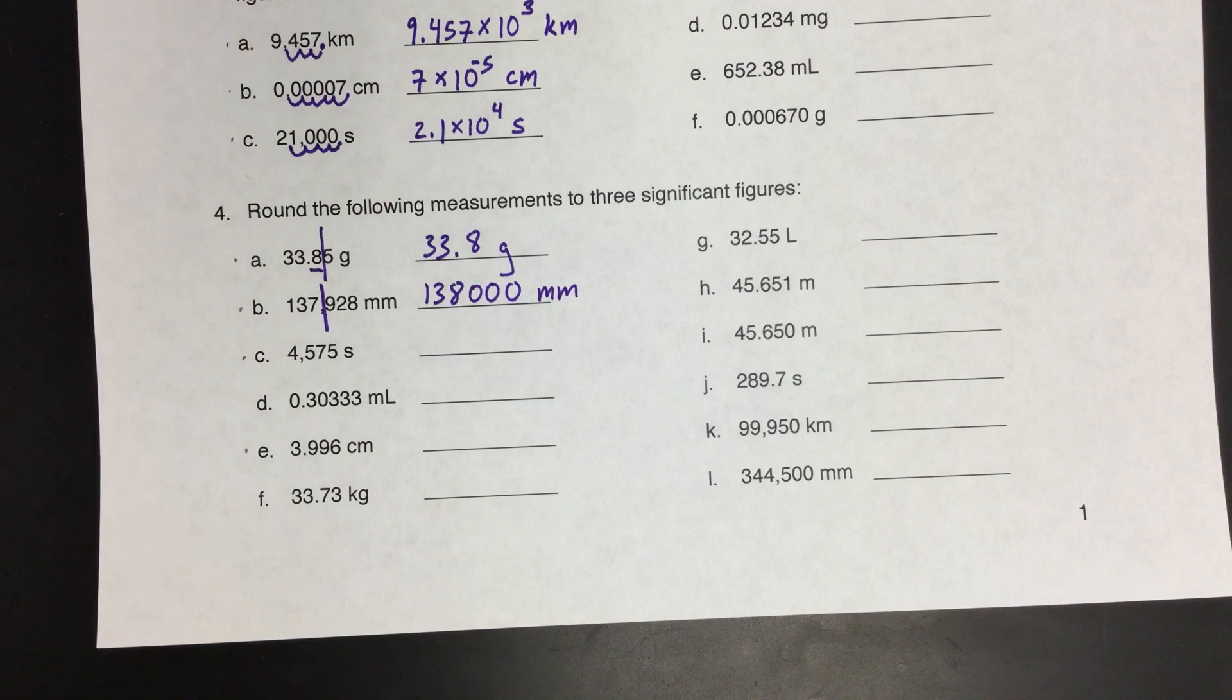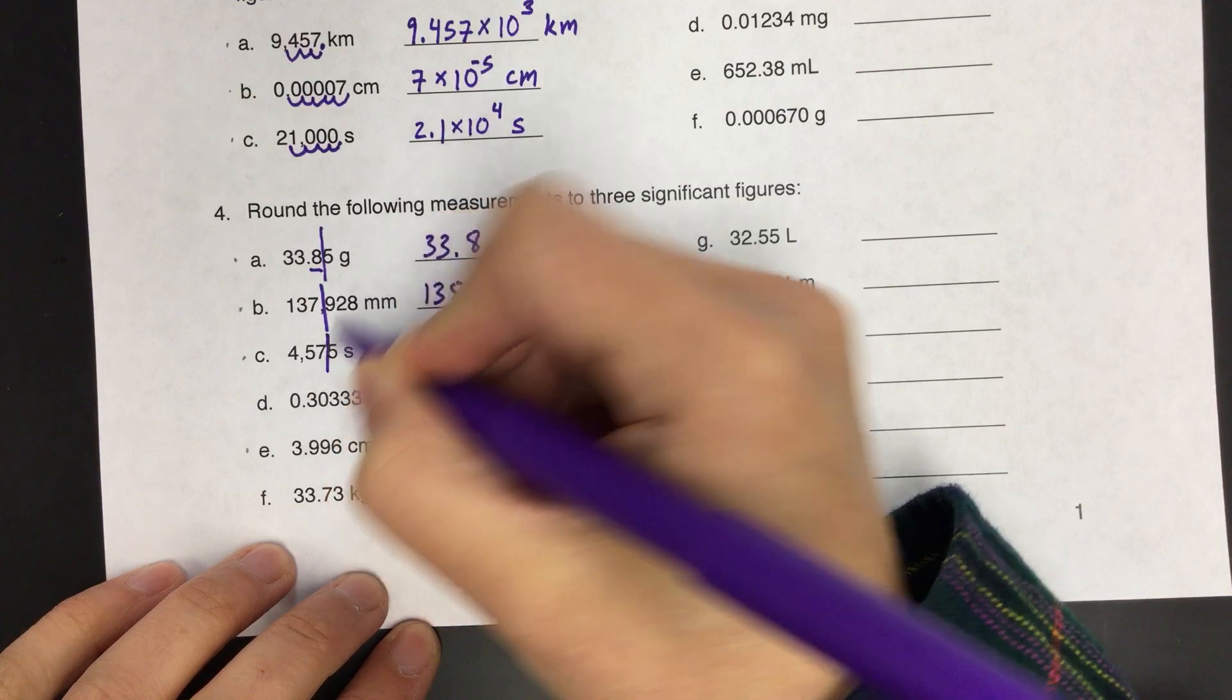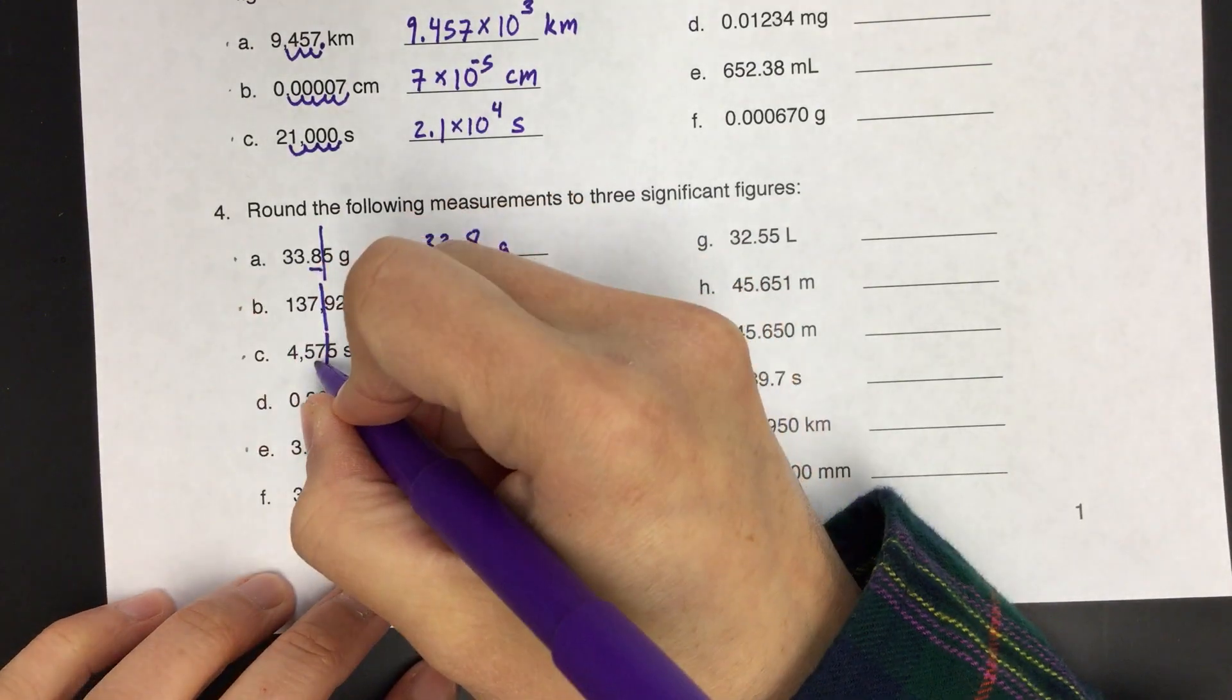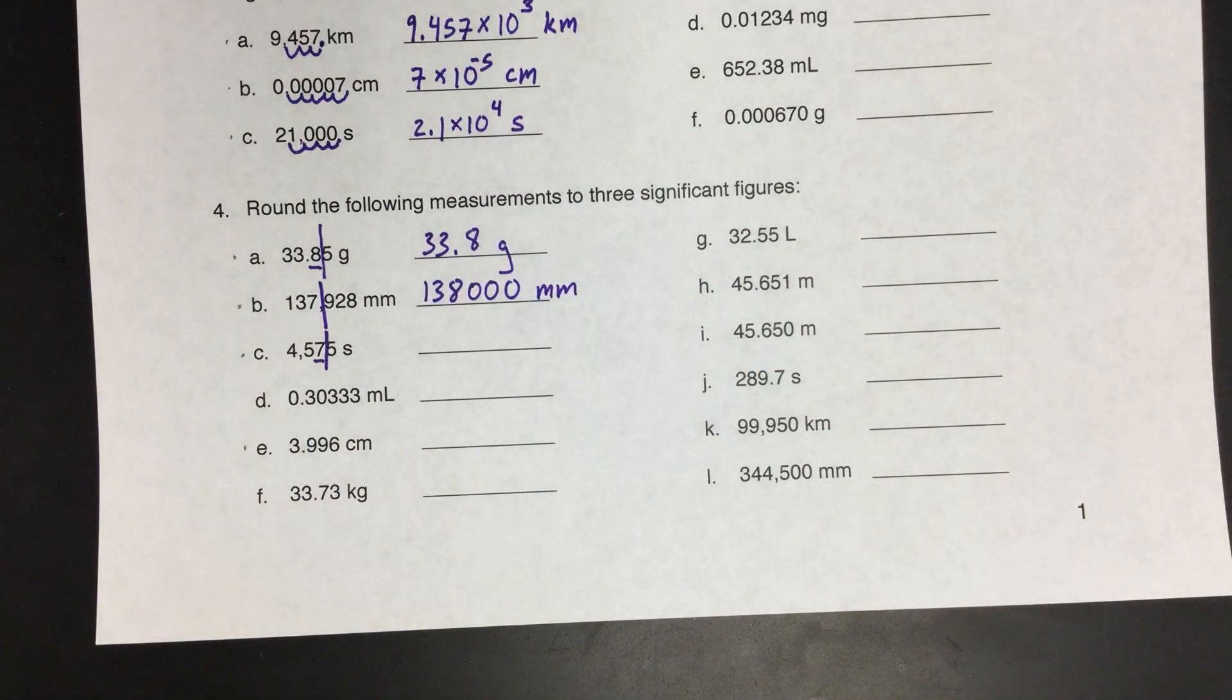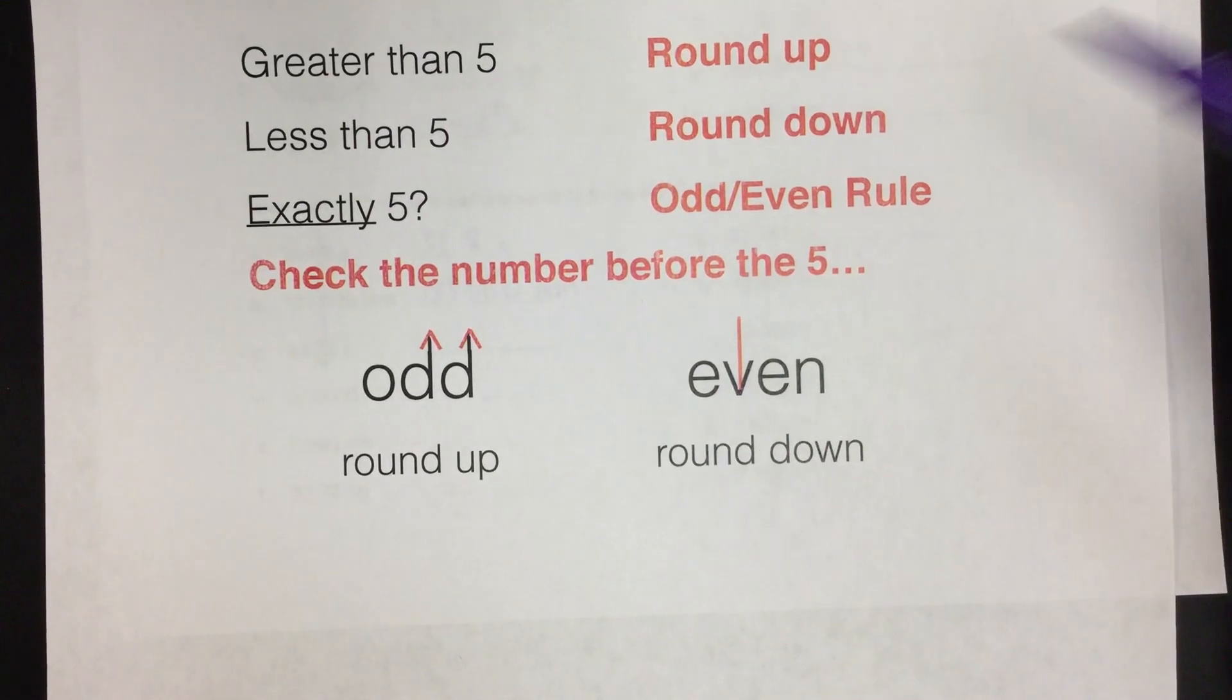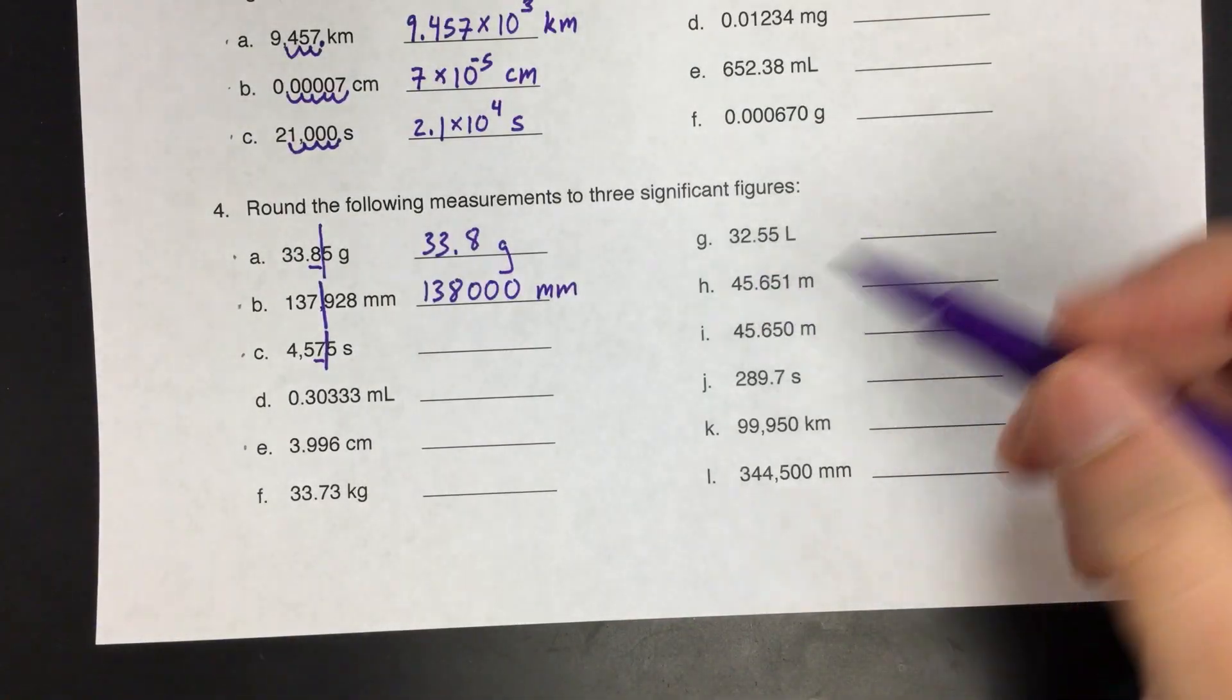Next one, again, we want three sig figs. So count to 1, 2, 3, draw a line there. We have another problem. It's exactly halfway, because we end with a 5 with nothing else after it. It's exactly halfway between 7 and 8. So again, we need to look at the number before the 5, and this time it's 7, which is an odd number. So if we're using the odd-even rule, if it's odd, it tells us to round up. So we're rounding up half the time, rounding down half the time.